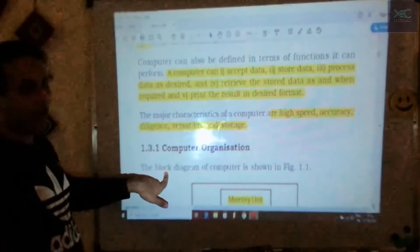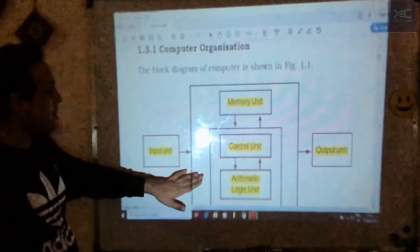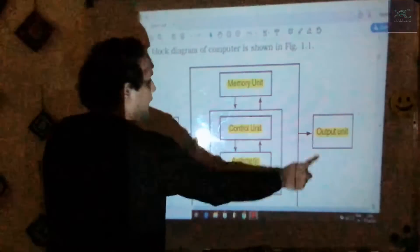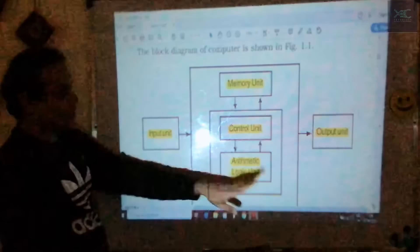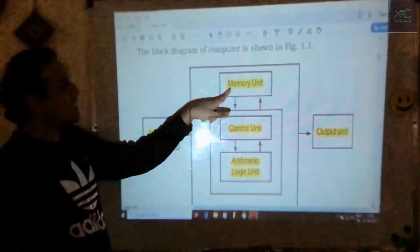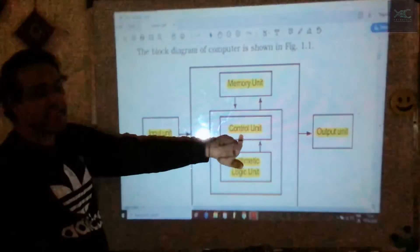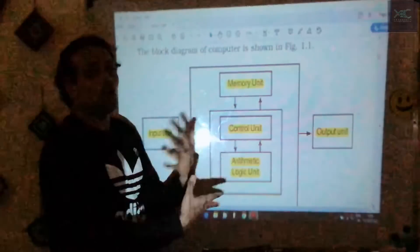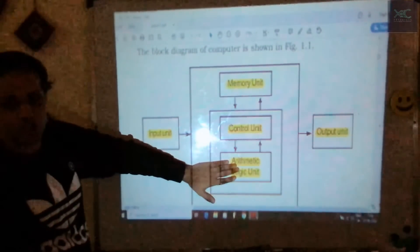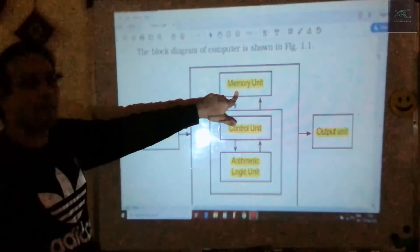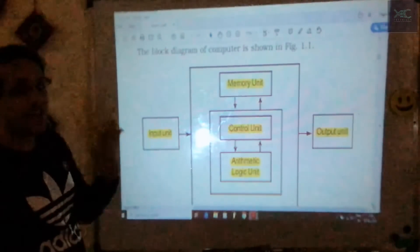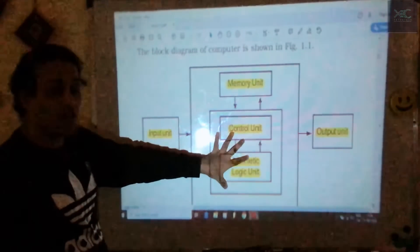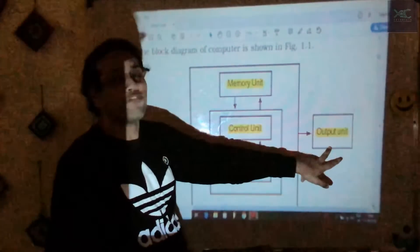The computer organizational chart shows input, output, and the processor. Inside the CPU we have the memory unit, the arithmetic logic unit (ALU), and the control unit. Data input into the system goes through the ALU for mathematical or scientific calculations, or to the memory unit for saving and storing. The control unit tells what is happening and directs the whole operation.